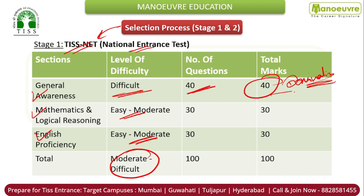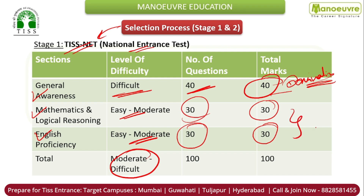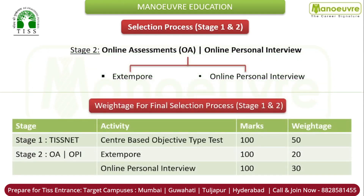Mathematics and Logical Reasoning has 30 questions for 30 marks. English Proficiency has 30 questions for 30 marks. Overall the exam is scored out of 100.